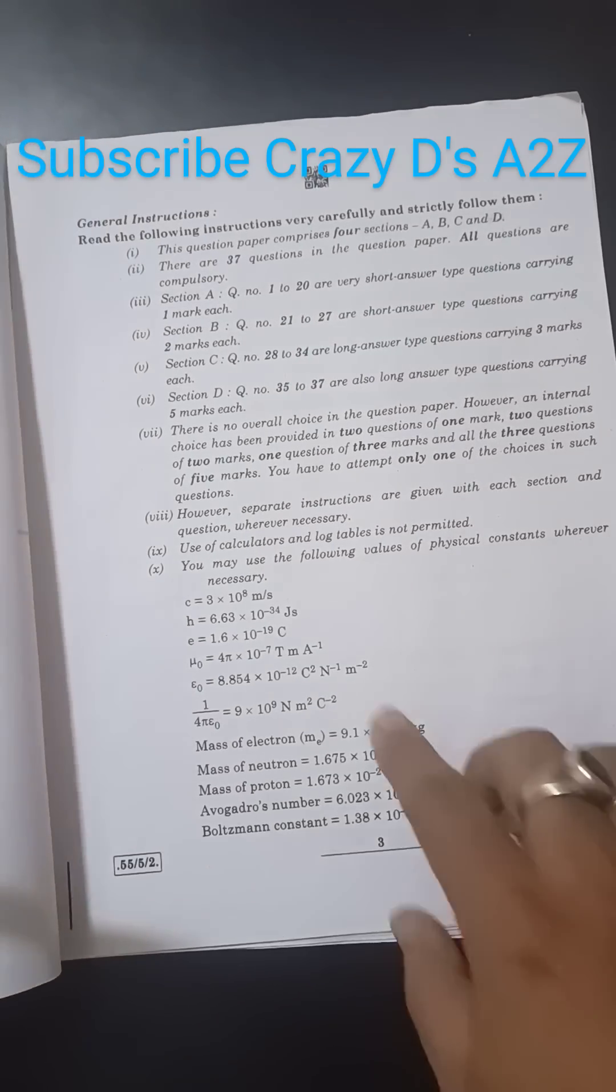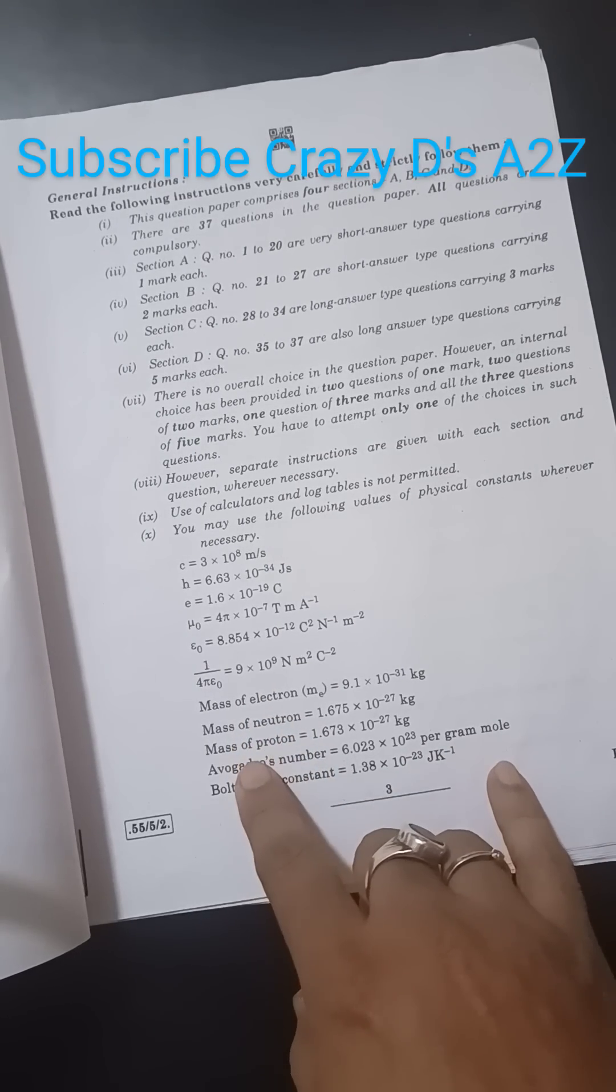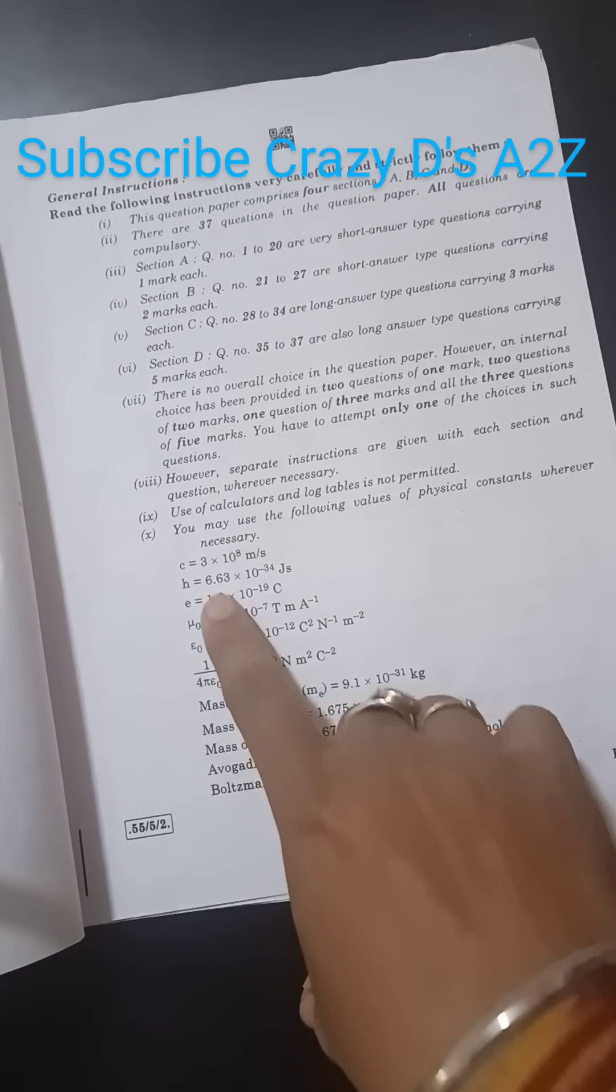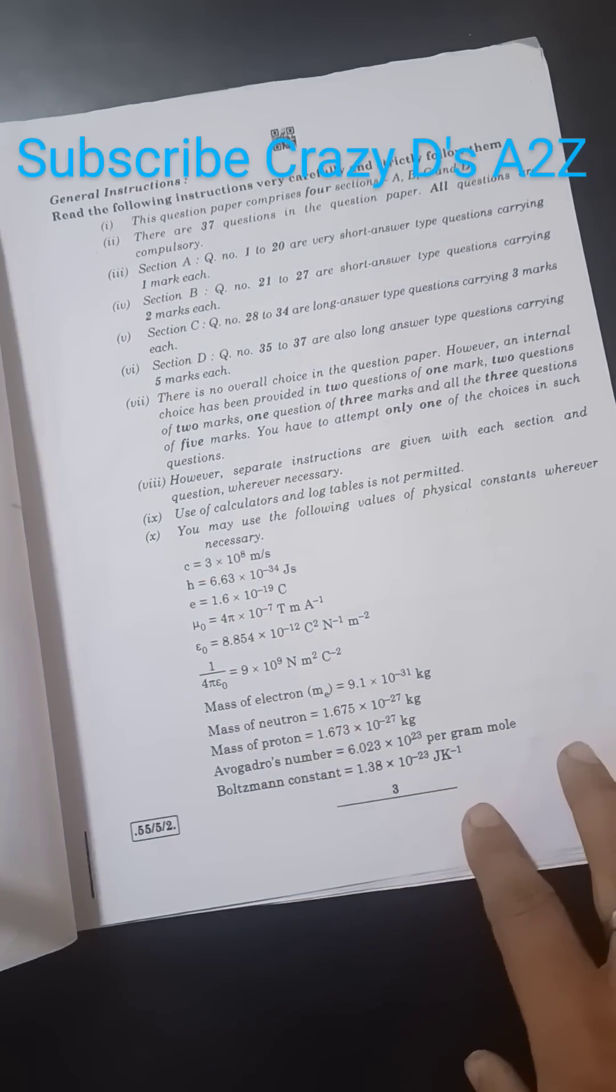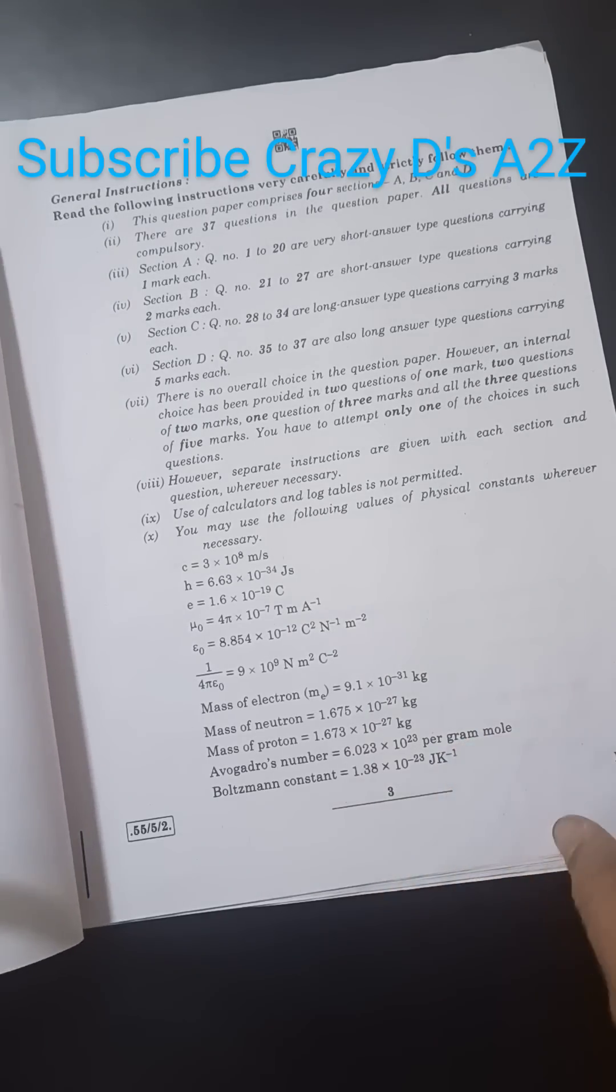The paper has all the constants already given, like mass of electron, mass of neutron, mass of proton, Boltzmann constant, Planck's constant, and charge of electron. These are all already given for you so that you can easily solve the numerical.